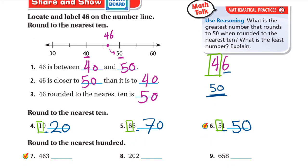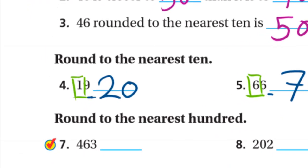For the next number, the hundreds digit is in the 400s or 500s. We look at the digit to the right, which is 6. Since 6 is a strong digit, it rounds up to 500.